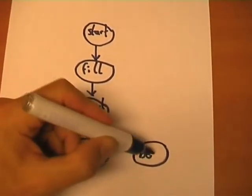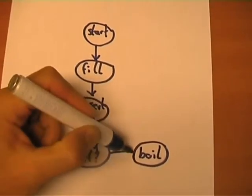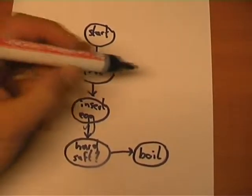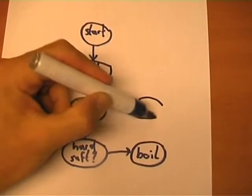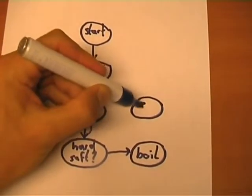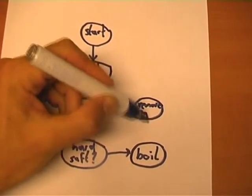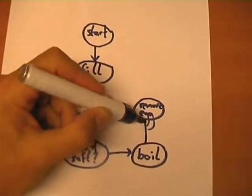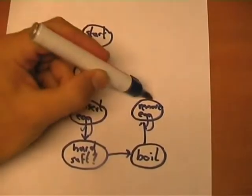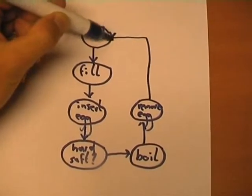When I have determined that on the device, the next step is to boil it using the heuristic I determined. After that is done, we go to the next state which tells me to remove the egg. And after that, we're back in the starting state.